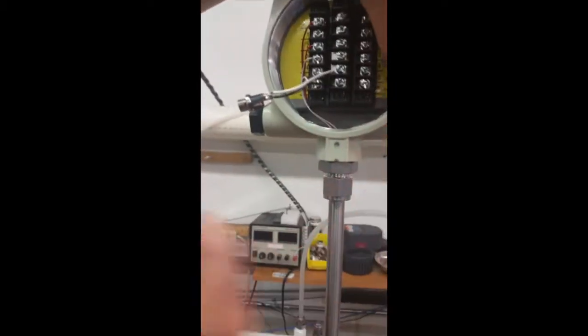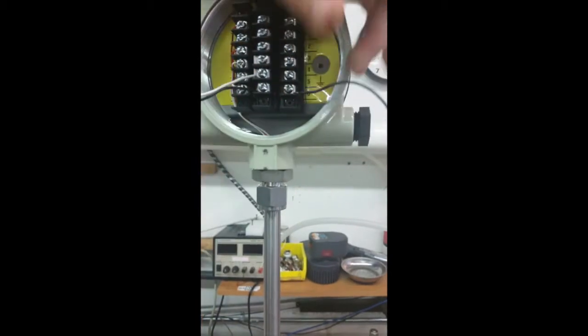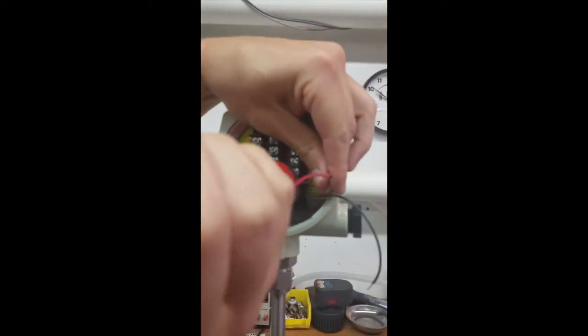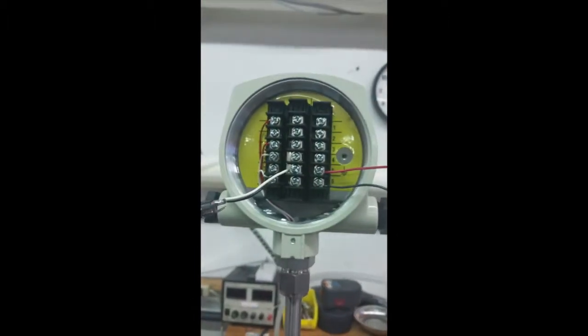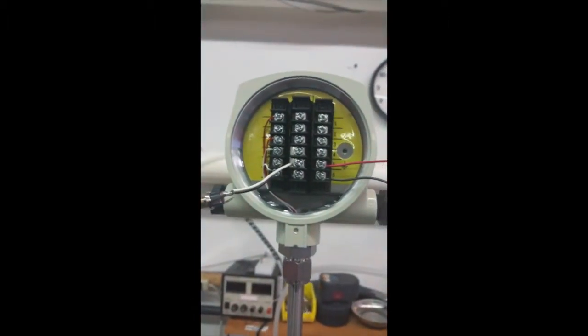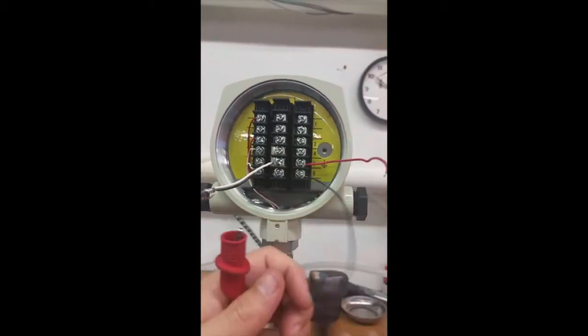Next he'll hook up the 4 to 20 wires. He's on C5. And now we have proper wiring for internally powered 4 to 20.